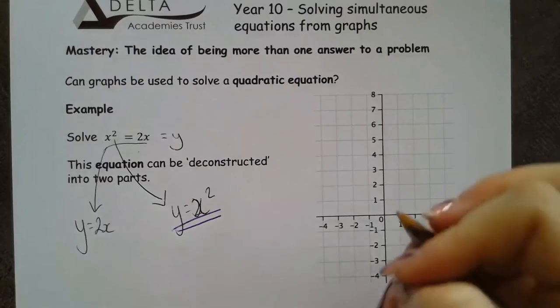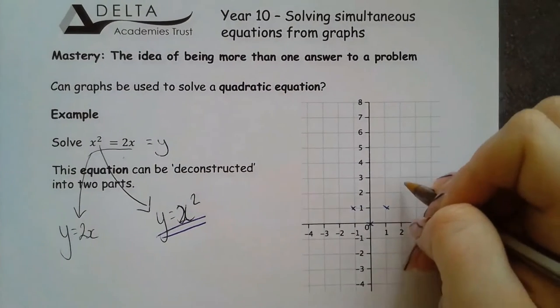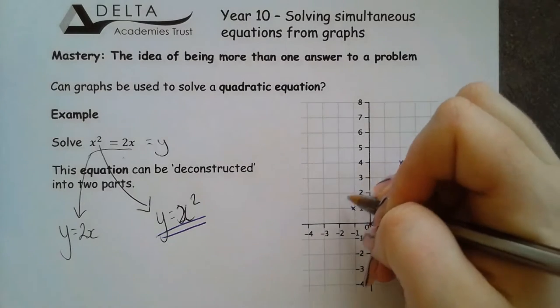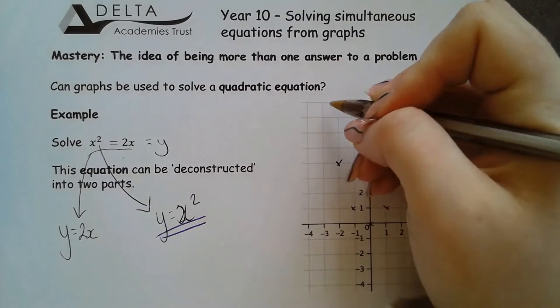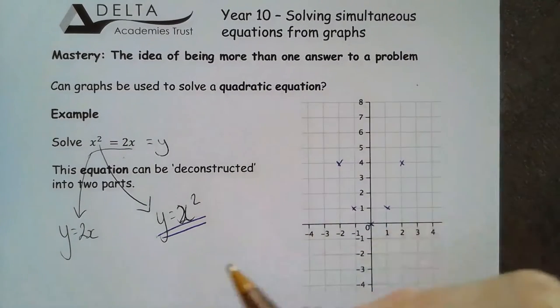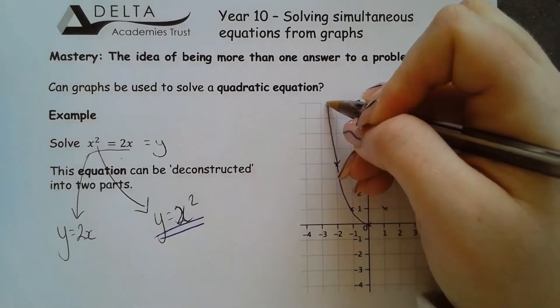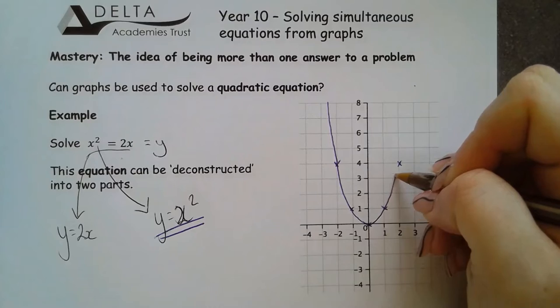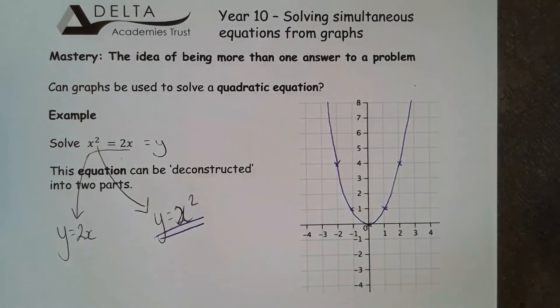I'm going to start by drawing y equals x squared. That should be relatively easy for us now. We should be going at 0, 0, 1, 1, minus 1, 1, 2, 4 because we're squaring, negative 2, 4, and then we haven't quite got enough to get us to 9 so we should be heading somewhere up there. So my graph should look something like this. We're not quite there for the 9 yet but lovely and symmetrical.